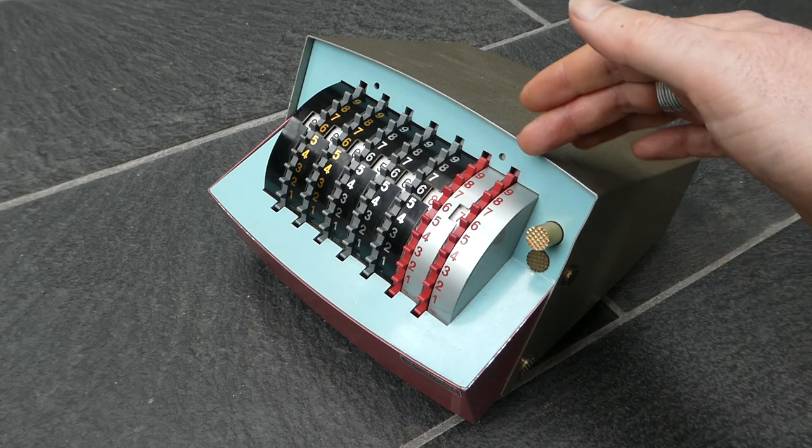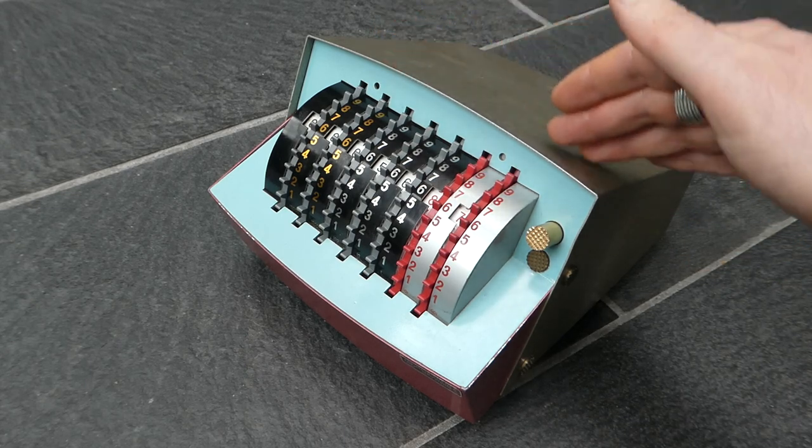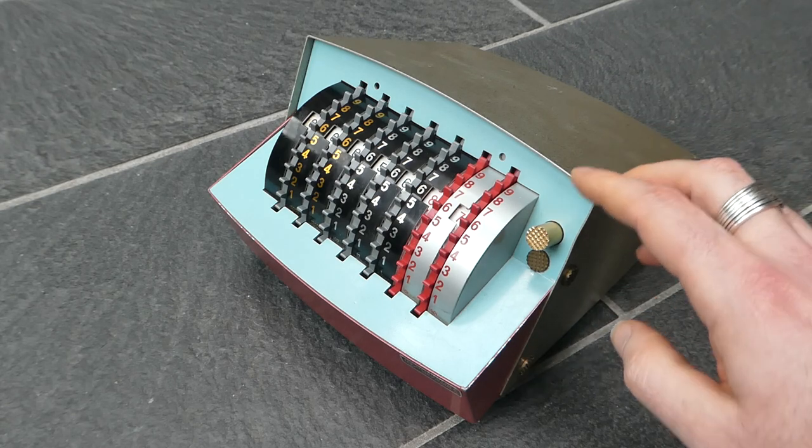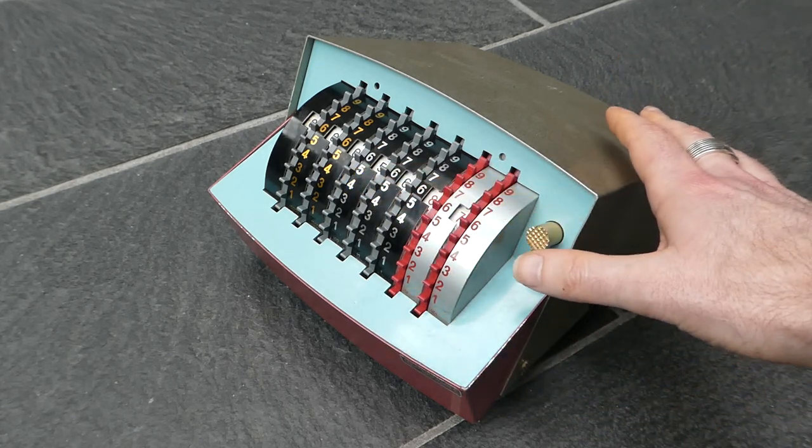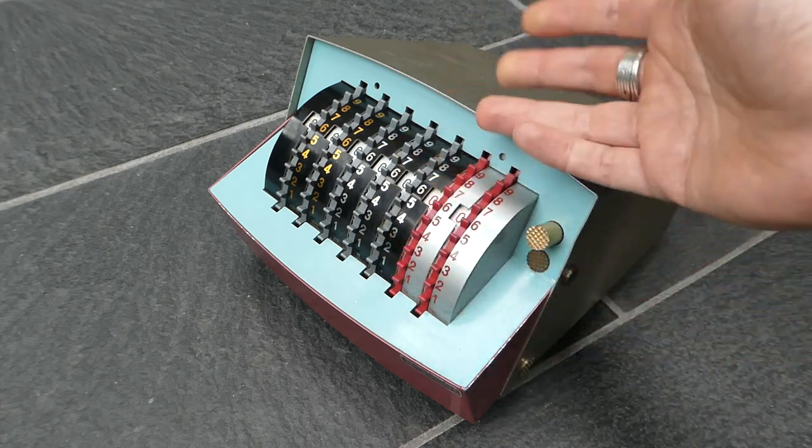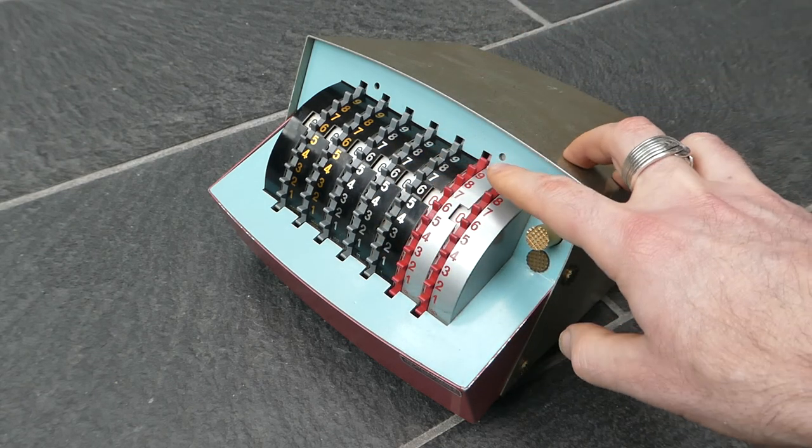And those springs that are used to store the energy for the carry mechanism are also used in the clearing mechanism. You can clear the register by pushing this button here, and those same springs pull the wheels back to zero.